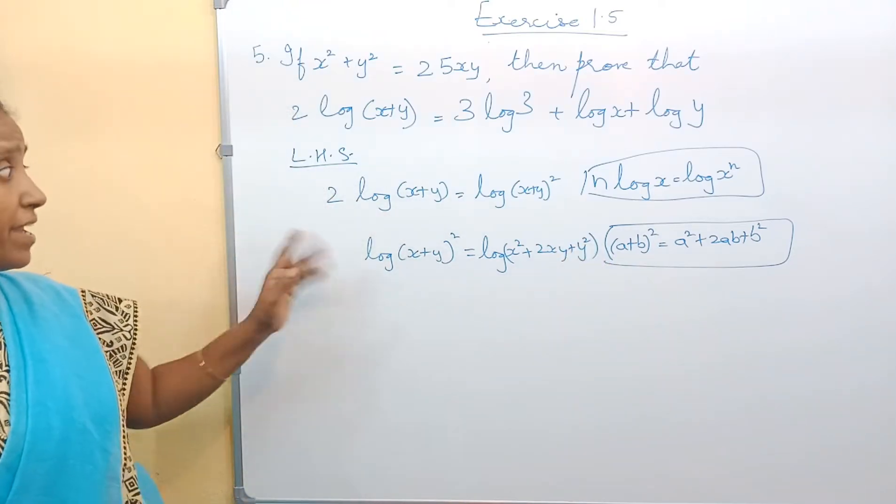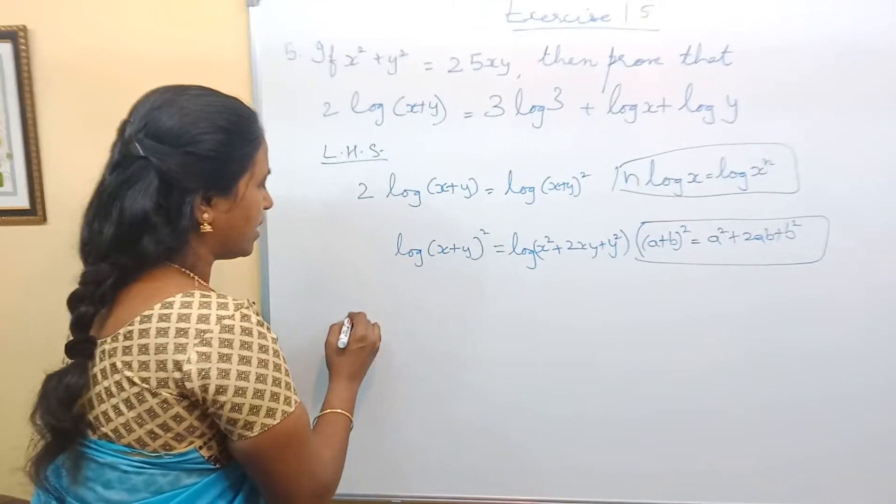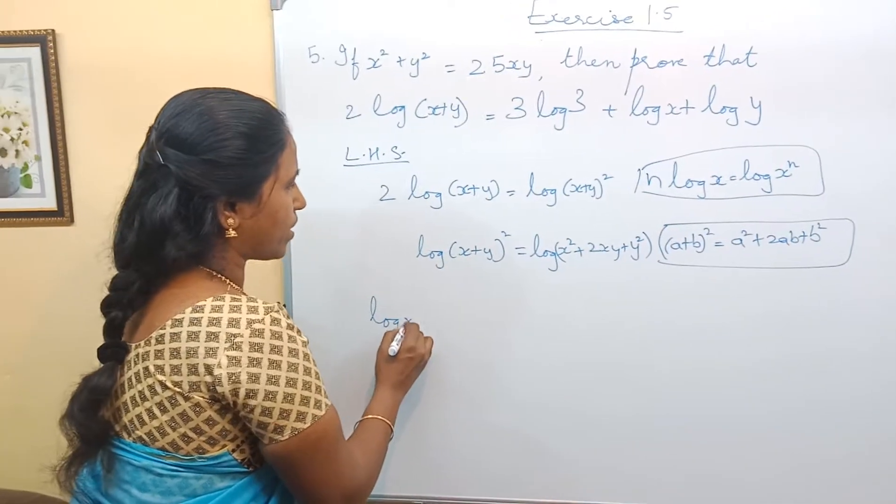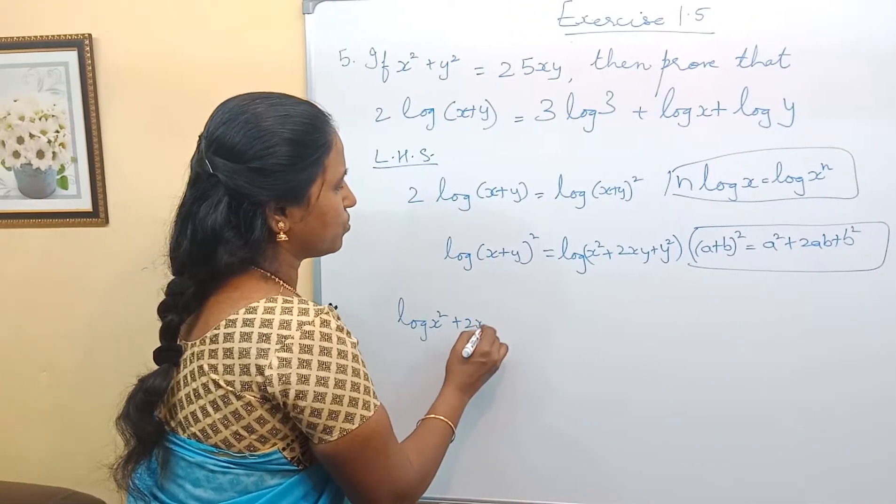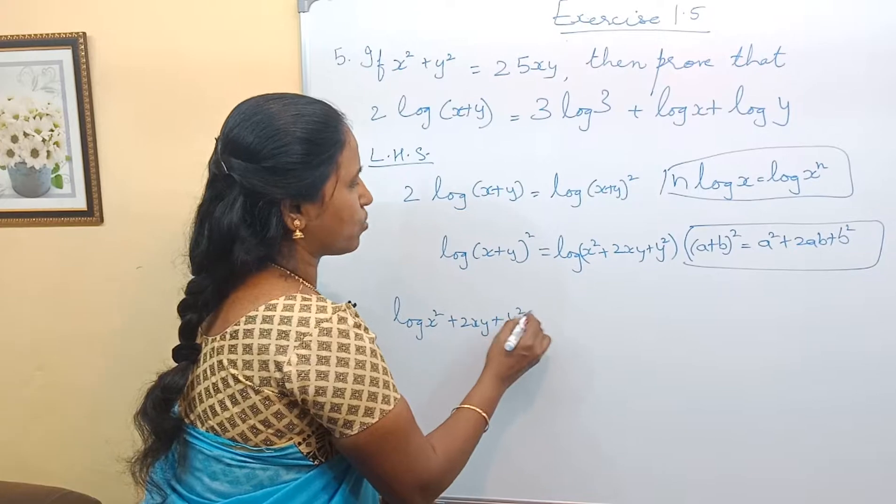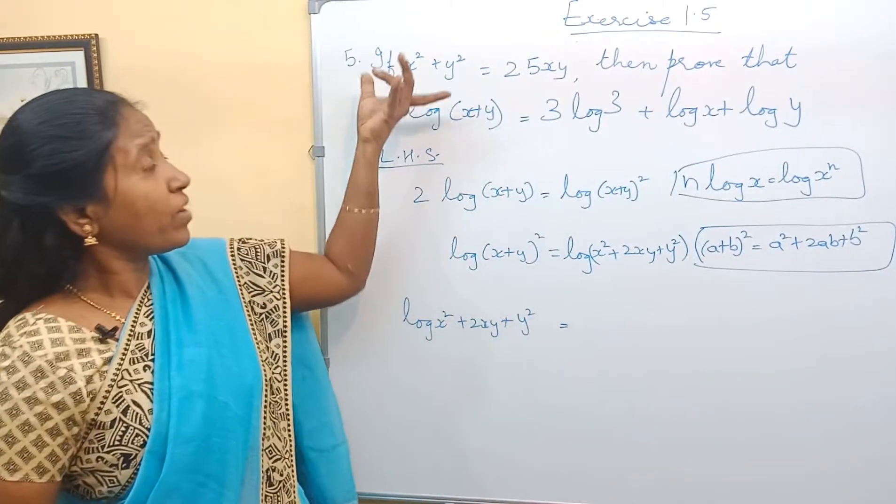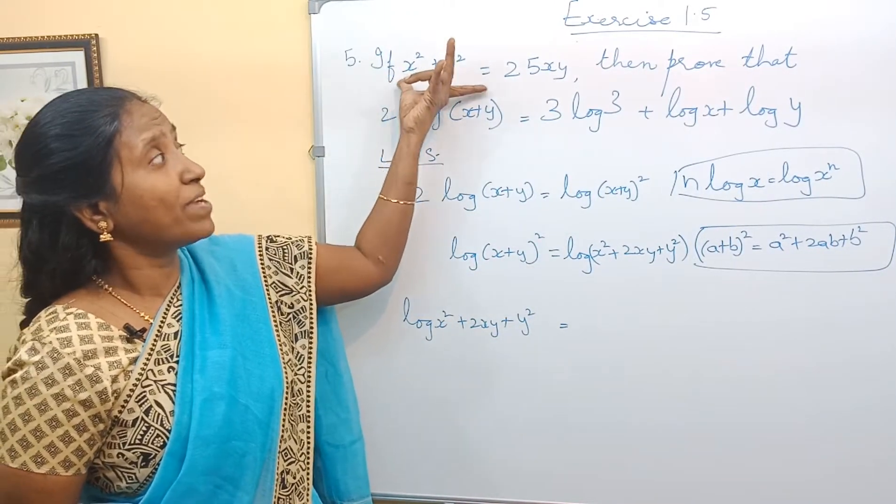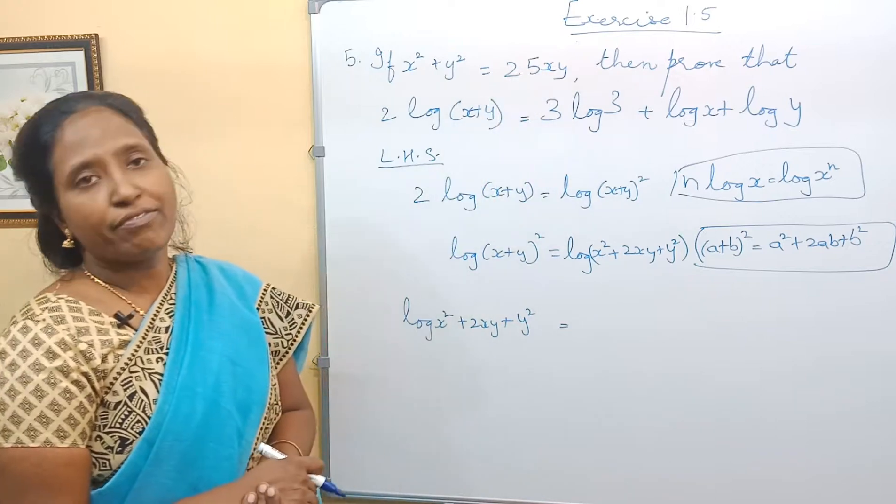And now if you see this, it's like log(x² + 2xy + y²). Right? Now we have the data x² + y² = 25xy. So why don't we bring this closer to each other?